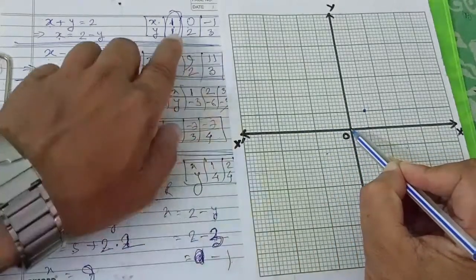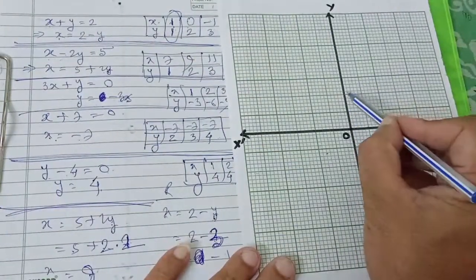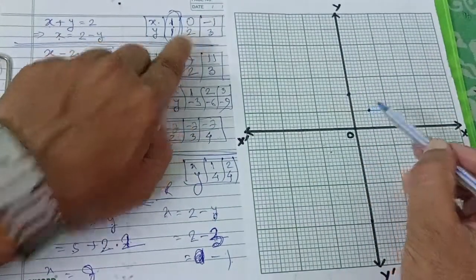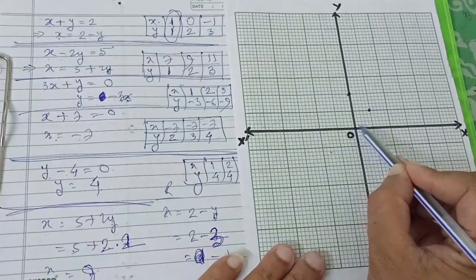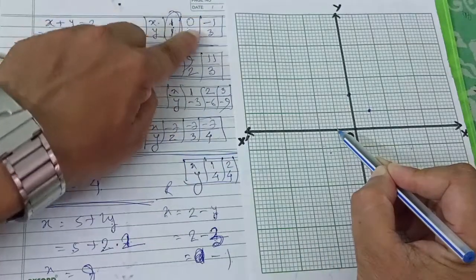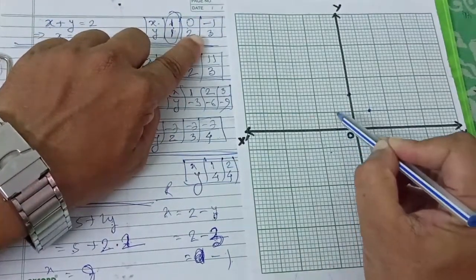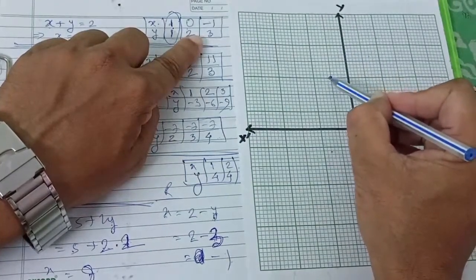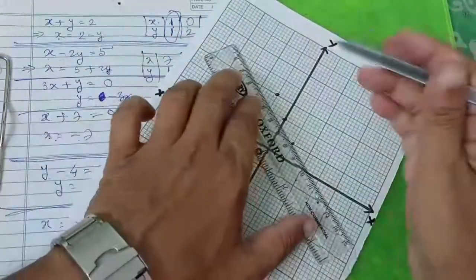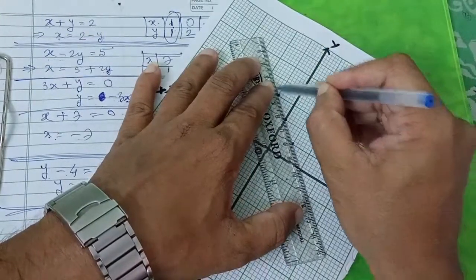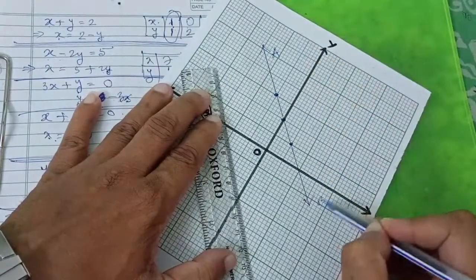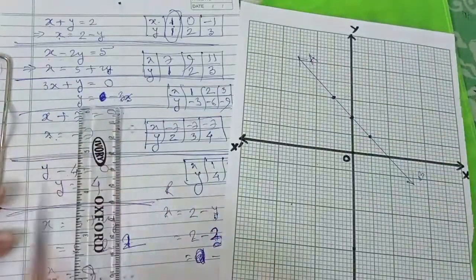Now for the point minus 1 comma 3: x is minus 1 so we go to minus 1 on the x-axis, then y is 3 so we go up 1, 2, 3. All three points are plotted. Now let us join them — this gives us a straight line. Name it AB. So AB is the graph of this equation.